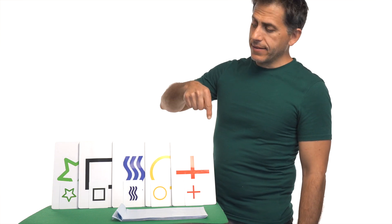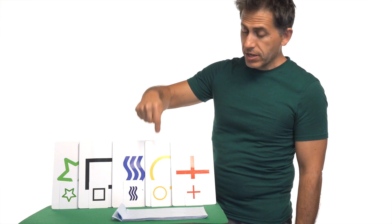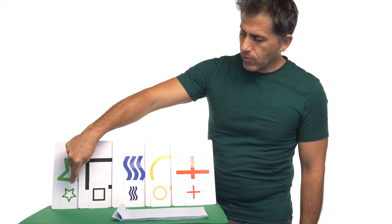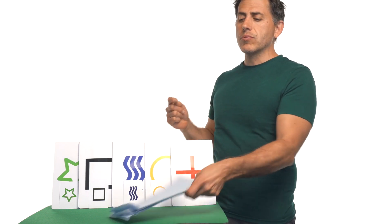Here I have some giant ESP cards. They have the symbols of star, square, wavy lines, circle, and cross. There are also five small cards with matching symbols and five empty envelopes.